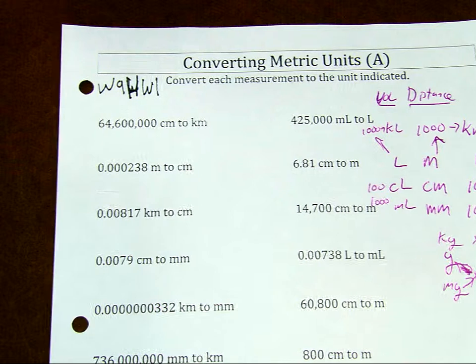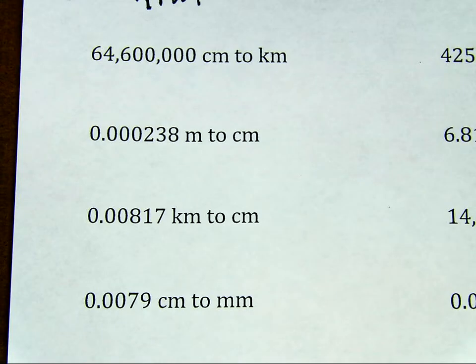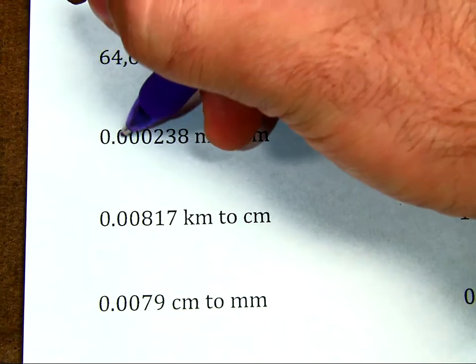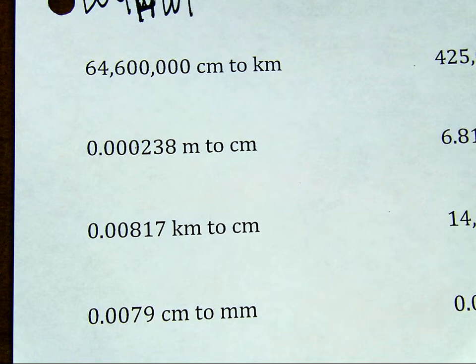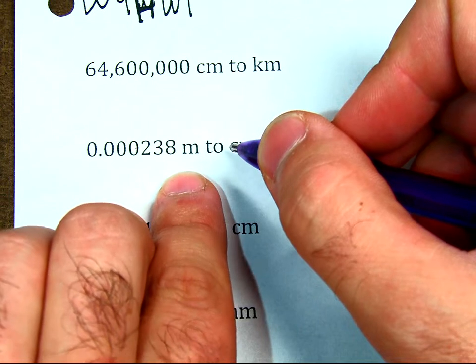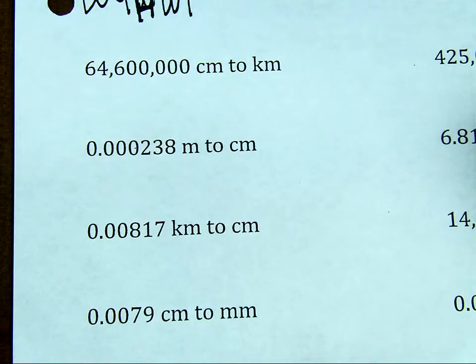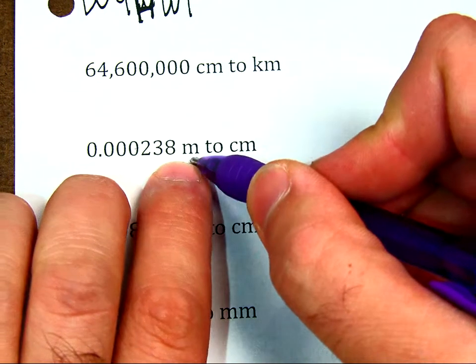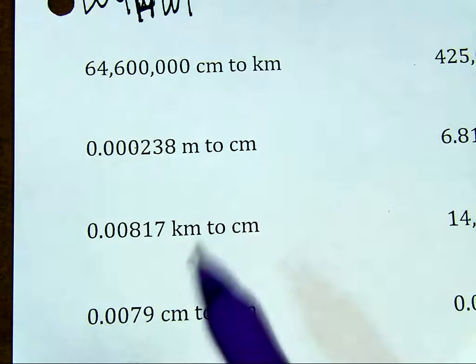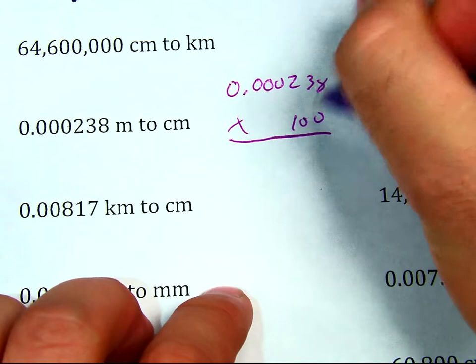So over here, when we're talking about some actual conversions, I'm just going to zoom in on this spot right here. I have 0.000238 meters and I want to figure out how many centimeters I have. If I have 100 centimeters per meter, that means in order to figure out how many centimeters I have, I have to multiply. That's because I'm going to have many more centimeters than I have meters. So I have to expand my number. When I'm going from meters to centimeters, I have more centimeters, so I have to multiply to get more of them.